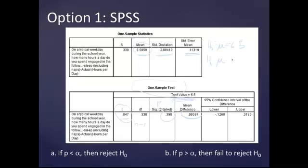And the alternate hypothesis is that, no, actually, our sample sleeps something other than six and a half hours a night. Since it's a two-tailed test, I'm not saying it's less than or greater than. I'm just saying it's something different from six and a half. And when I actually run the test statistic, I see that I get a T value of .847 on 338 degrees of freedom. And the P is greater than .05. If I'm doing a .05 two-tailed test, then I'm going to fail to reject the null hypothesis.